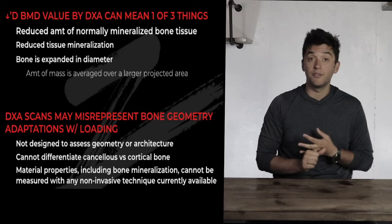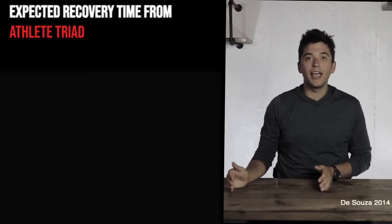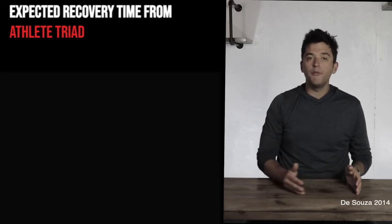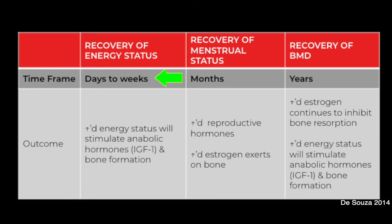When someone is diagnosed with the athlete triad, recovery can be quite long. Energy status can return relatively quickly, hormonal status potentially within a few months, but bone mineral density may lag for a few years — all dependent on the individual. Beyond just the triad, we've also learned there's even more going on with someone's bone health.